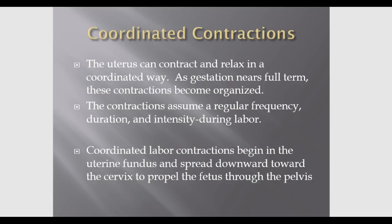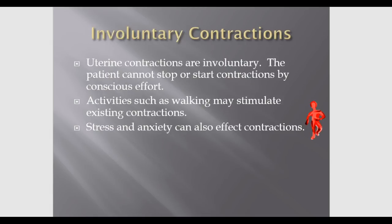As gestation nears term, the contractions become more organized. Early contractions are called Braxton Hicks contractions, but as she gets closer to term they become more regular. During labor, contractions assume a regular frequency, duration, and intensity. Coordinated labor contractions begin in the uterine fundus, spread downward toward the cervix, and propel the fetus toward the pelvis. While contractions are involuntary, activities like walking may stimulate them, and stress and anxiety can also influence uterine contractions.